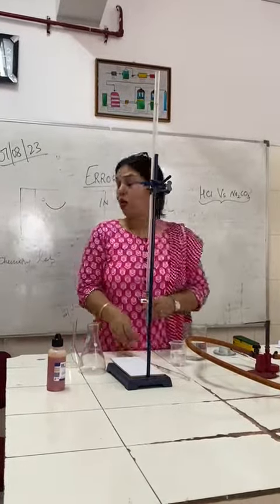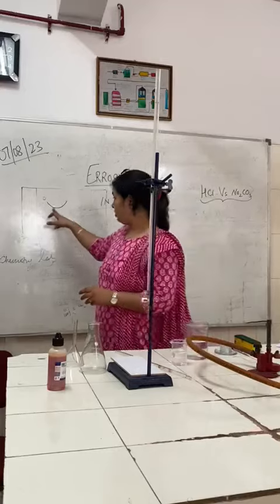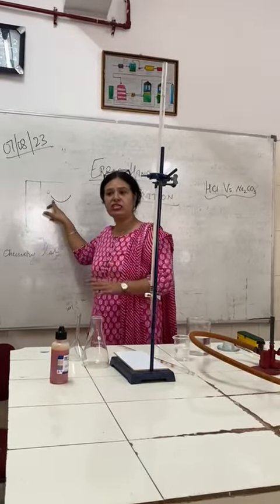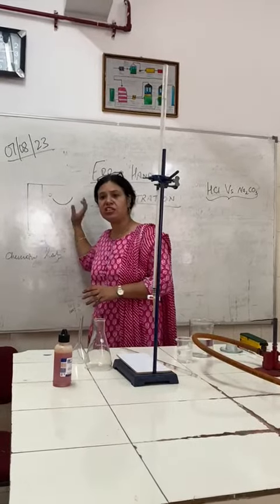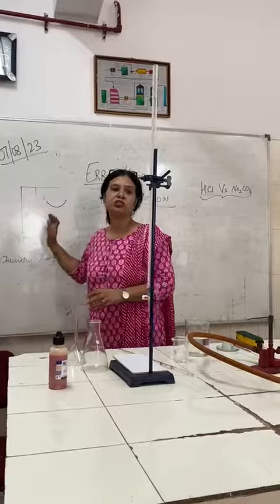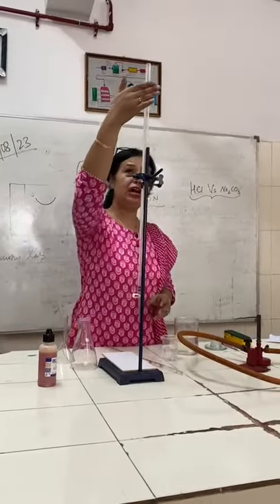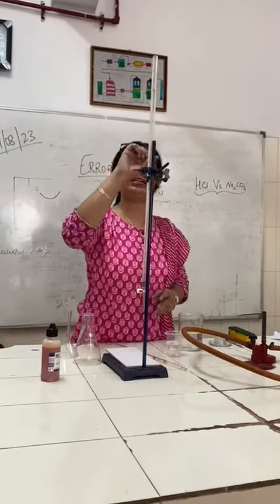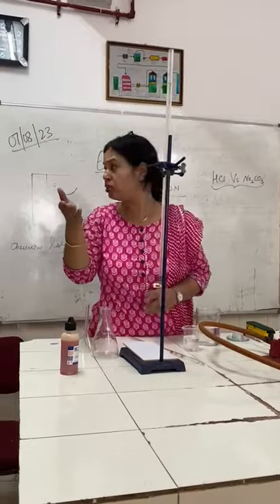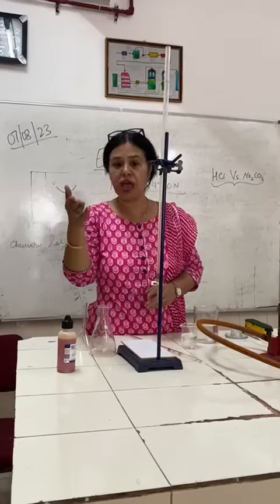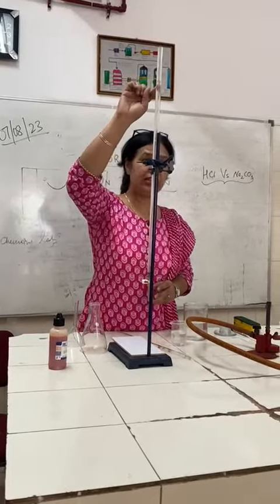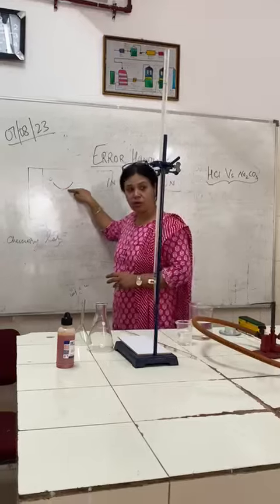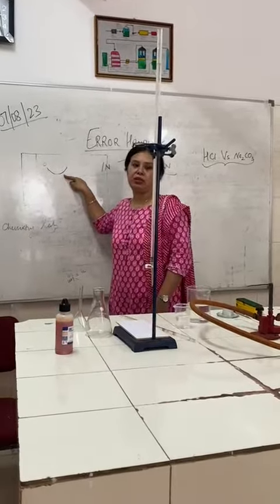The last point is that liquid always has a curved surface, called the meniscus. In case of a coloured liquid we read the upper meniscus because the lower one is not visible. In case of a colourless liquid we always read the lower meniscus because it is visible.